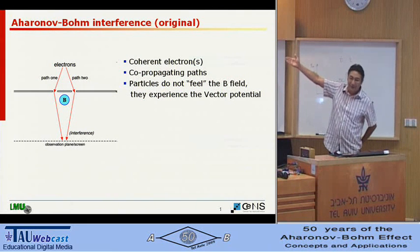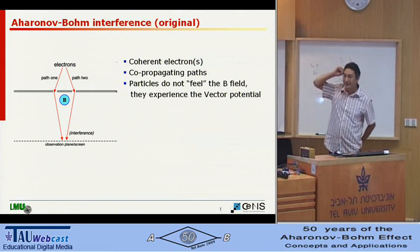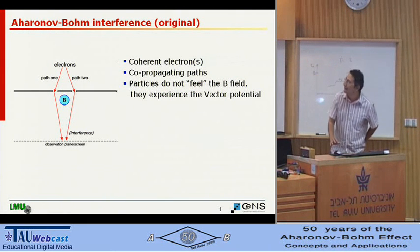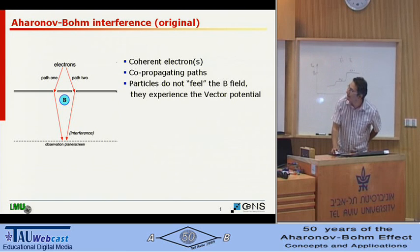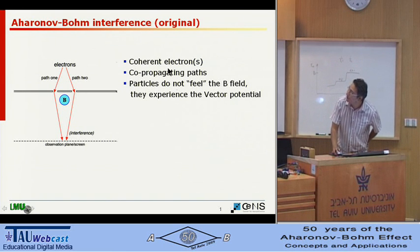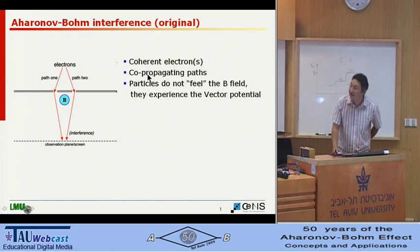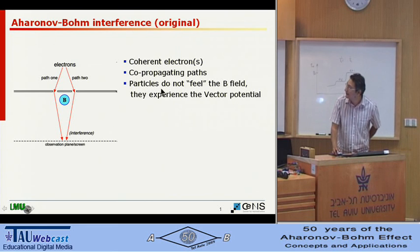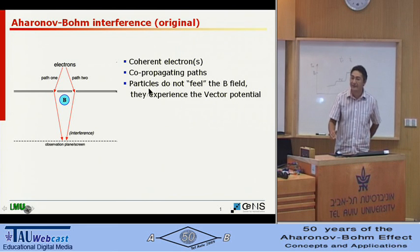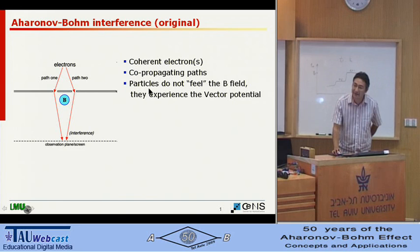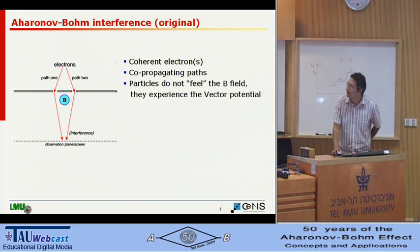This is the first picture you can find in Google. If you Google it, it says that for Aharonov-Bohm, you need electrons which are coherent, the states are co-propagating, and the particles do not feel the magnetic field, but they experience the vector potential.